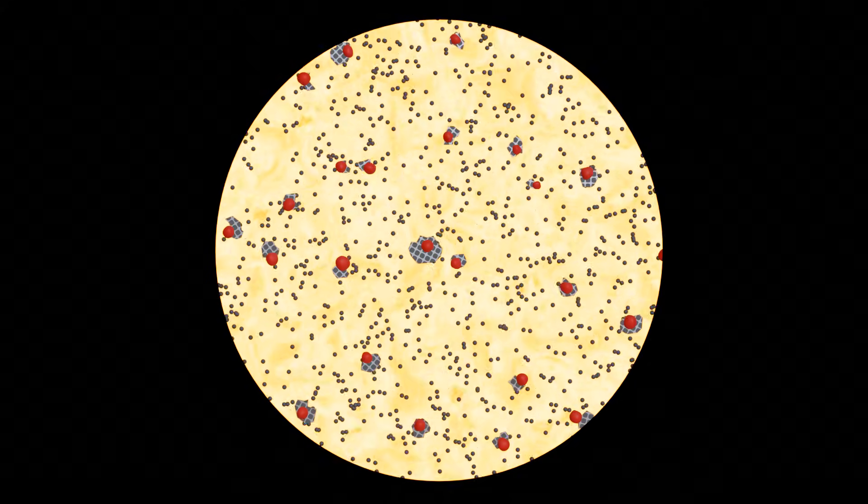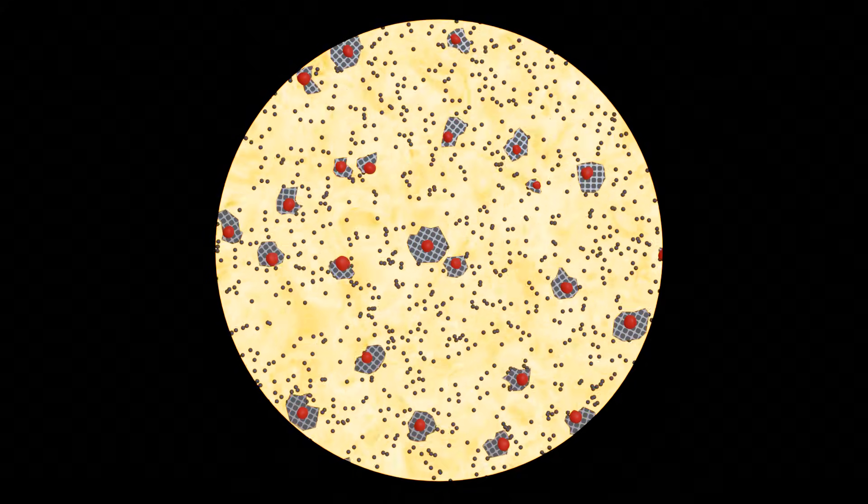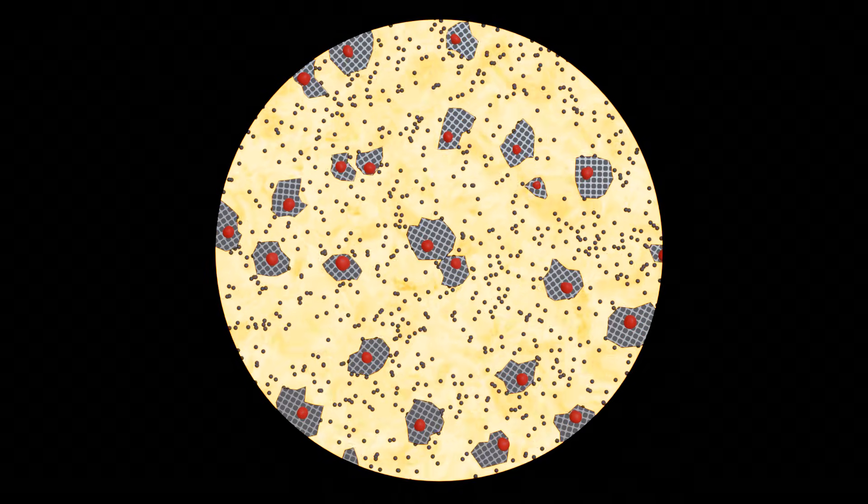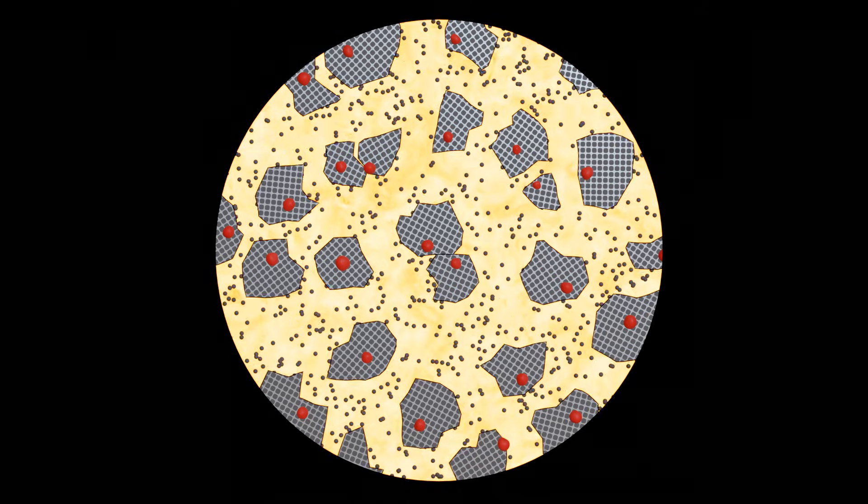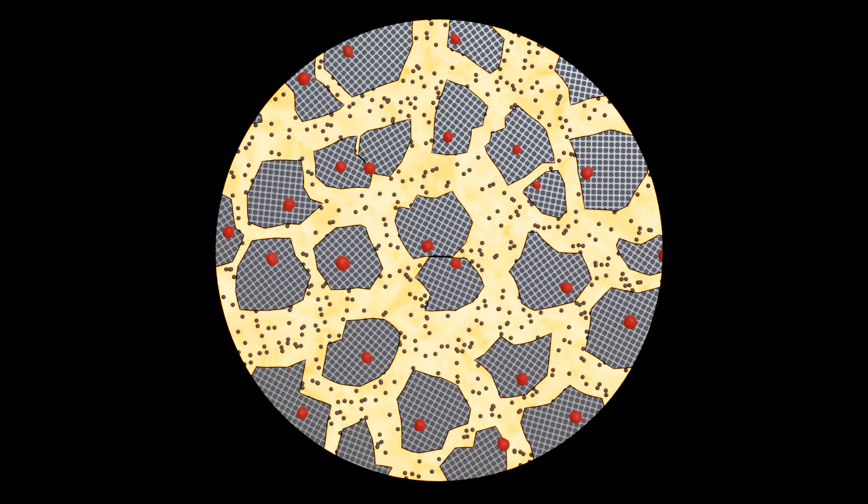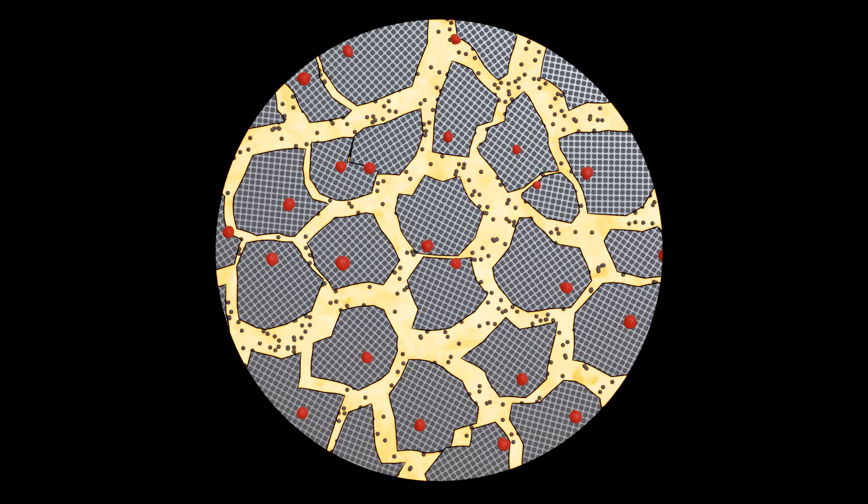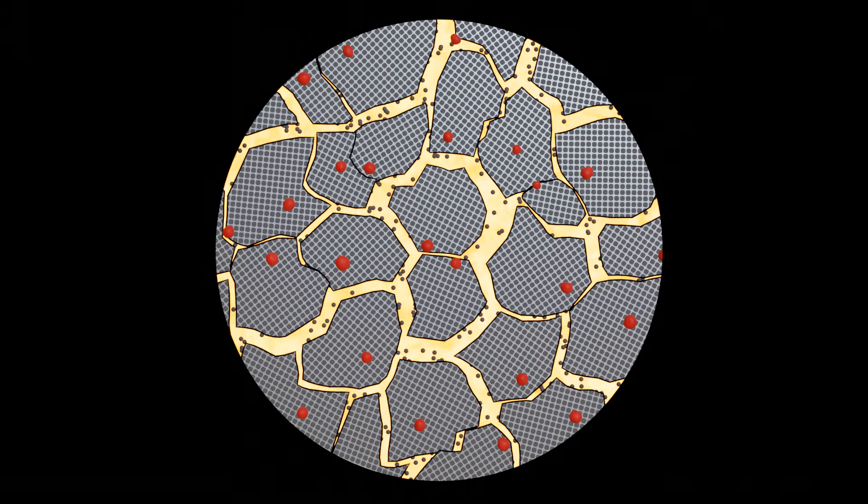The microstructure formation during crystallization can basically be divided into two phases, nucleation and nucleus growth. Both the phase of nucleation and the phase of nucleus growth can be specifically influenced in order to form the microstructure according to the later desired properties. Due to their complexity, these phases will be dealt with in more detail in separate videos.